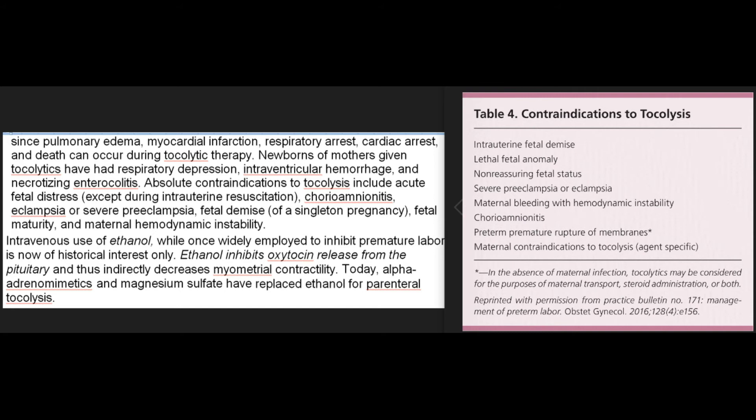Newborns of mothers given tocolytics have had respiratory depression, intraventricular hemorrhage, and necrotizing enterocolitis. Absolute contraindications to tocolysis include acute fetal distress (except during intrauterine resuscitation), chorioamnionitis, eclampsia or severe preeclampsia, fetal demise of a singleton pregnancy, fetal maturity, and maternal hemodynamic instability. Intravenous use of ethanol, while once widely employed to inhibit premature labor, is now of historical interest only. Ethanol inhibits oxytocin release from the pituitary, thereby indirectly decreasing myometrial contractility. Today, beta-adrenomimetics and magnesium sulfate have replaced ethanol for parenteral tocolysis.